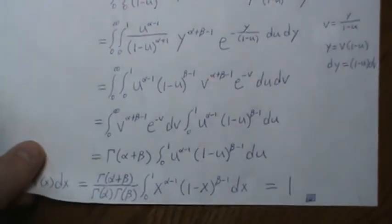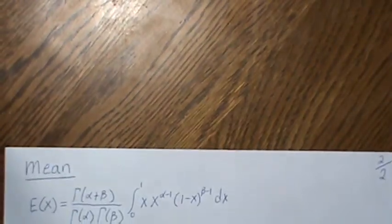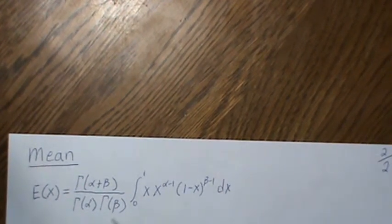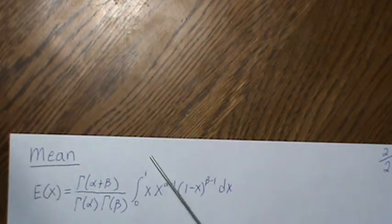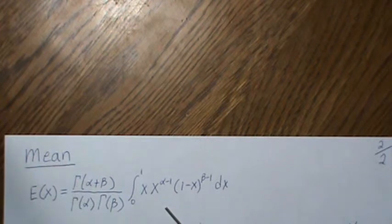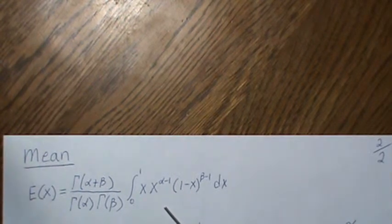Now let's look at the mean. We take the expected value of X. We plug in an X and then integrate over all possible values. What I try to do is make this look like another distribution or another density.